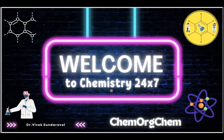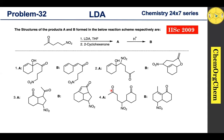Hello everyone, welcome back to Chemistry 2487. In this series we have been exploring solutions for previous years' competitive exam papers. If you are new here, don't forget to subscribe and hit the bell icon for notifications. Today we will take a question from the IAC biggest entrance exam 2009. This substrate initially reacts with LDA, followed by 2-cyclohexenone to produce product A, which further reacts in the presence of acid to produce product B. There are four options — let's find out which one is correct.